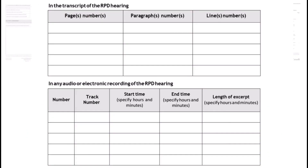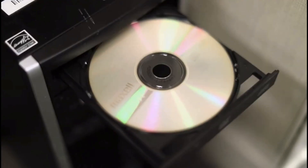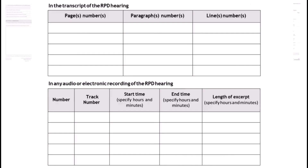If you think there were mistakes that happened in the RPD hearing, you need to indicate exactly where in the recording they can be found. You can use a written transcript or the recorded audio of your hearing to do this. If you're using a transcript, indicate the page, paragraph, and line where the mistake occurs.